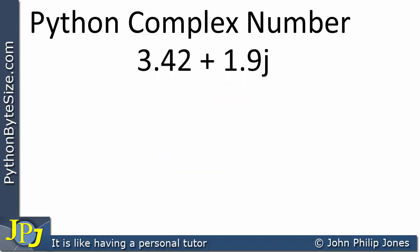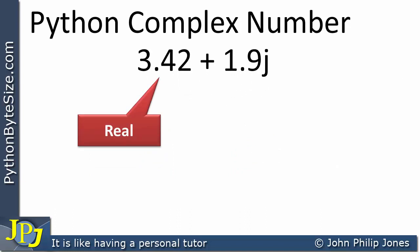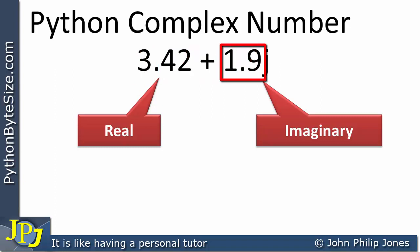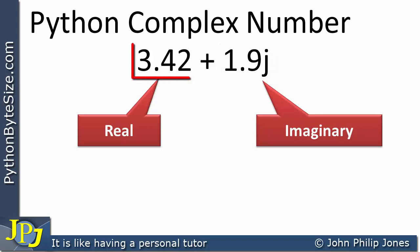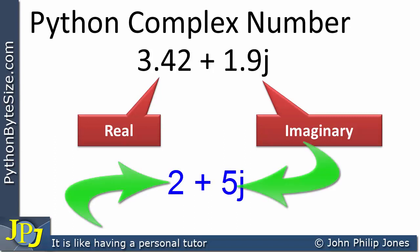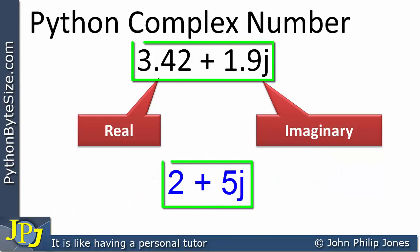With another example, you can see this is again a complex number. The real component is 3.42, which means we can have a number with a fractional part. The imaginary component is 1.9, also showing it can have a fractional part. So a complex number can have fractional numbers in both positions.